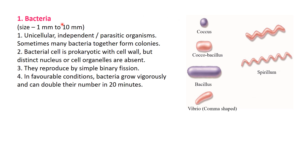Now we study bacteria. The size of bacteria is 1 micrometer to 10 micrometers - they are very small in size. They are unicellular - only a single cell. They may be independent or parasitic; parasitic means they depend on the host cell. Sometimes many bacteria together form colonies. The bacterial cell is prokaryotic with a cell wall, but a distinct nucleus or cell organelles are absent. Bacteria reproduce by simple binary fission - a single cell divides into two individuals.